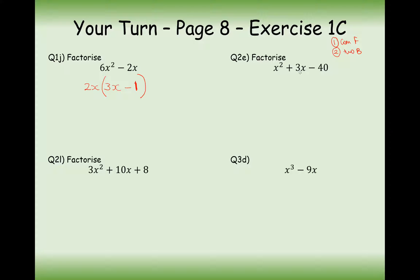In this case, look for common factors first — no common factors, so we'll try two brackets. Going through pairs of numbers: try 10 and 4. We need a negative, so minus 10 and 4 — nope. 10 and minus 4 — does that add to make 3x? Nope. What about 5 and 8? 5 and minus 8 — nope. But minus 5 and 8 works. So the answer is x minus 5 and x plus 8, because that expands to give us this expression.